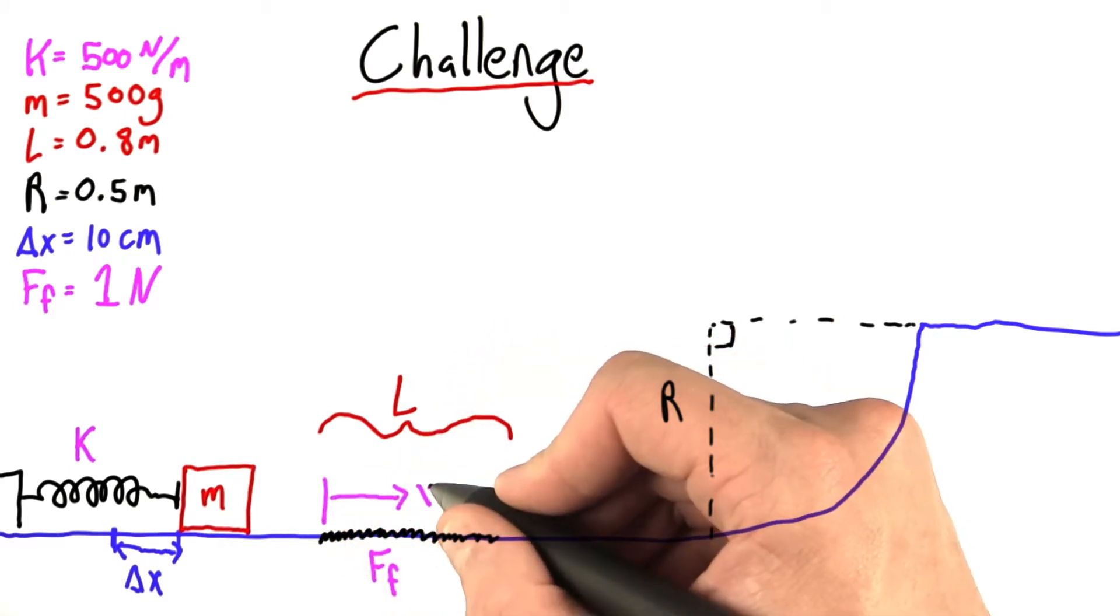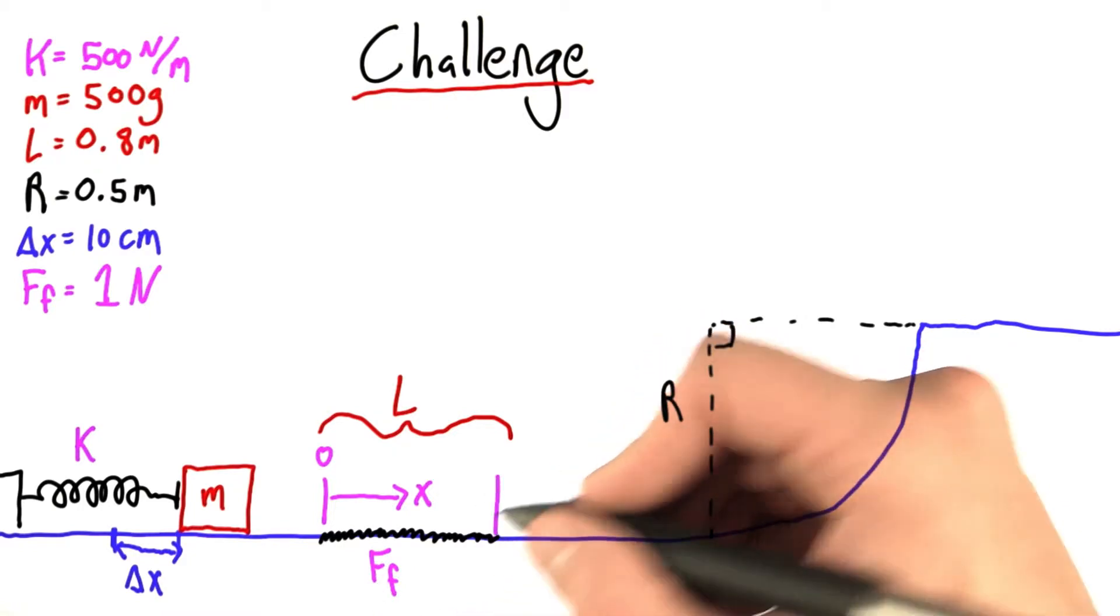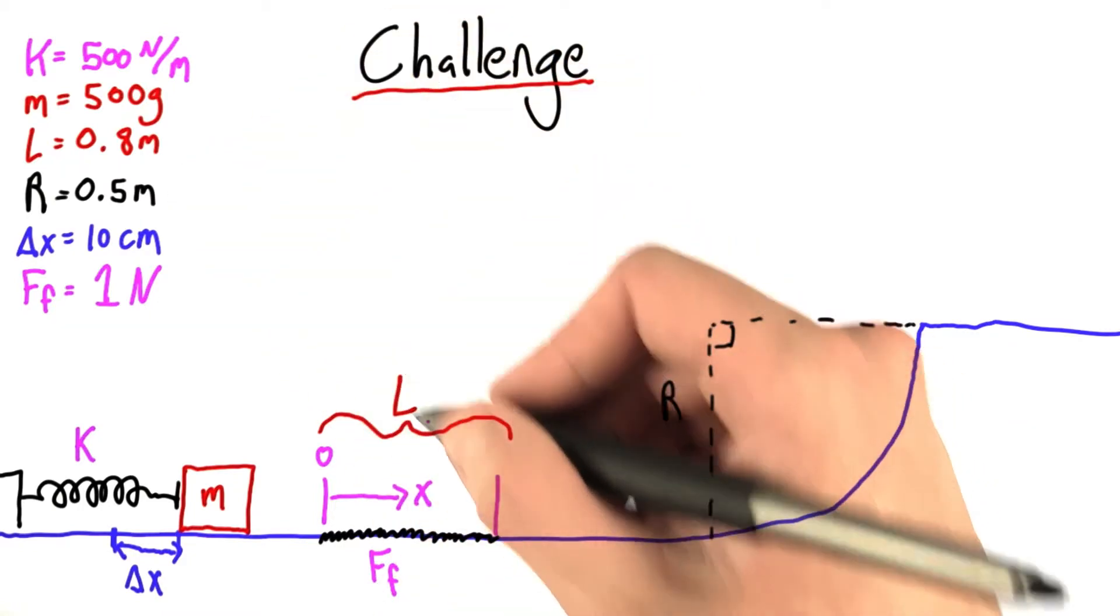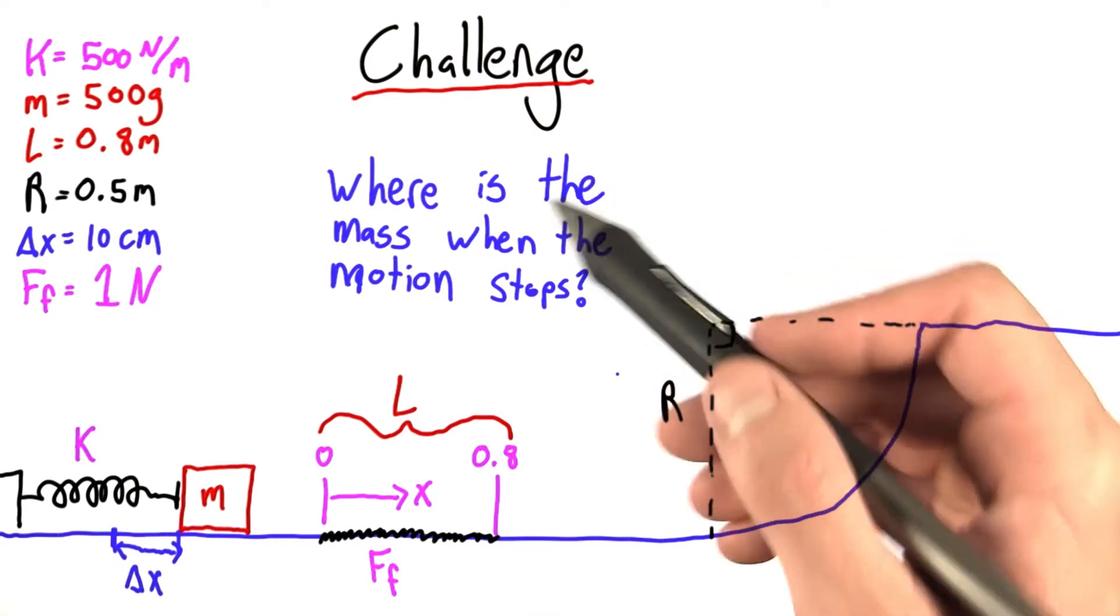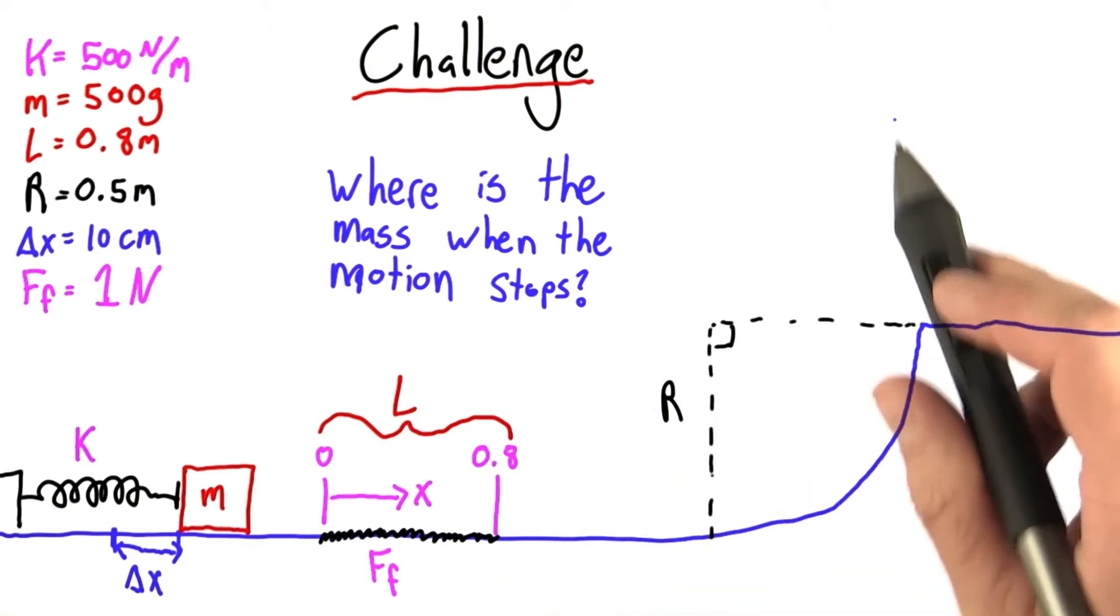So if we define some coordinate x, and this x goes from 0 at the beginning of this area with friction, all the way to the length which is 0.8, where is the mass when the motion stops? And as another interesting thing to think about, what's the maximum height the mass ever reaches when it launches off this ramp?